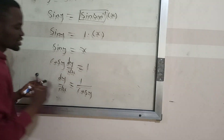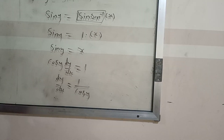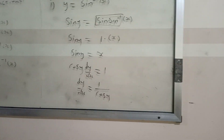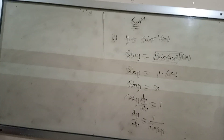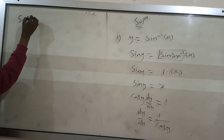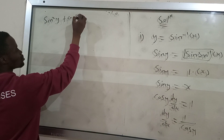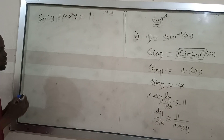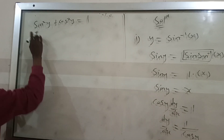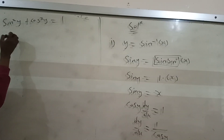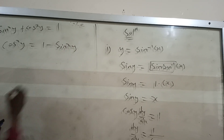We are not interested in y, so we use the trigonometric identity. We know that sine squared y plus cos squared y equals 1. Making cos squared y the subject: cos squared y equals 1 minus sine squared y.